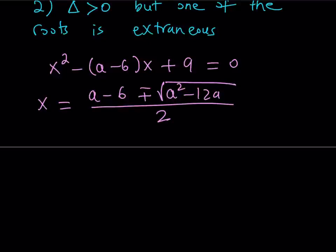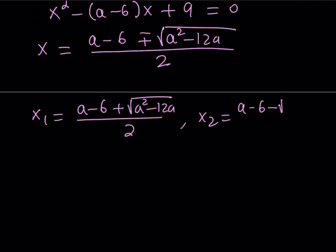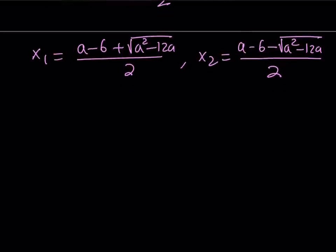Let's separate the two roots: x₁ = [(a−6) + √(a²−12a)] / 2 and x₂ = [(a−6) − √(a²−12a)] / 2. Here x₁ uses the positive sign and x₂ the negative sign. We want one of these to work in the original equation and the other not to. For a solution to fail, it must be ≤ −3, making x+3 ≤ 0 and the logarithm undefined.